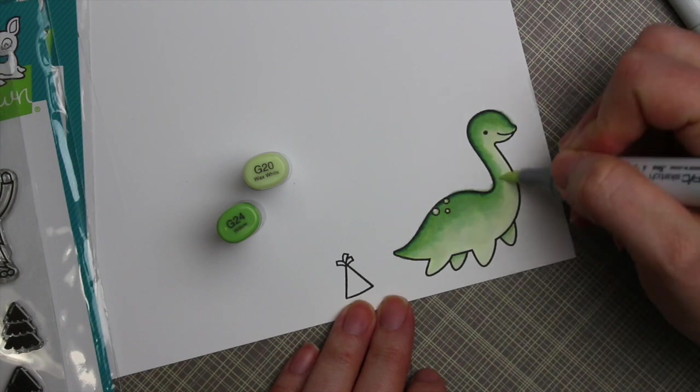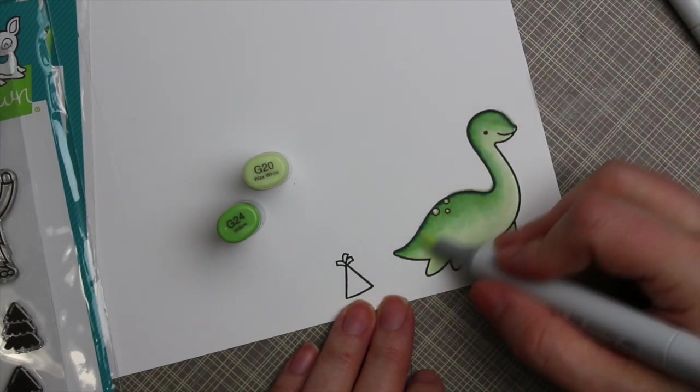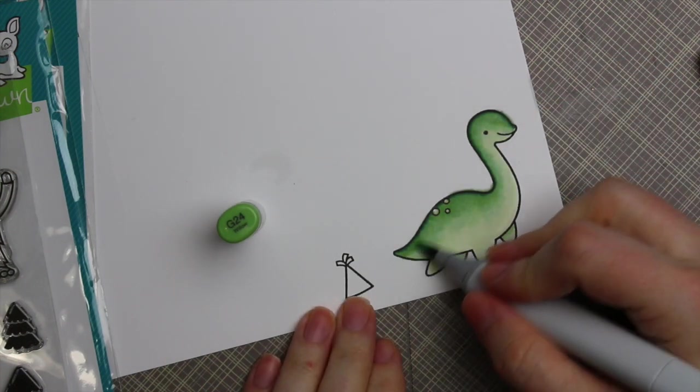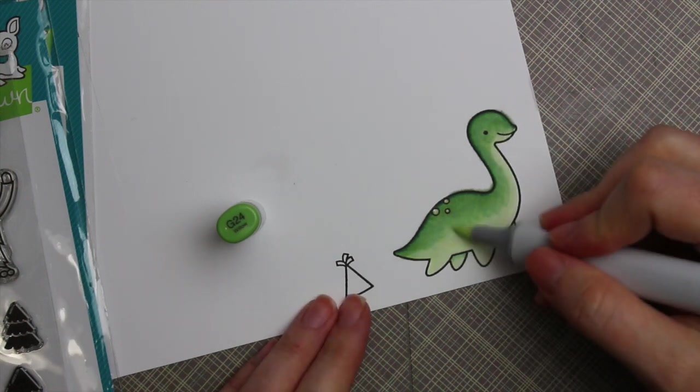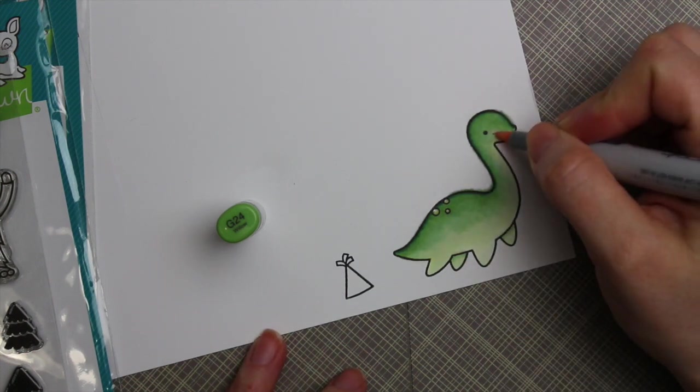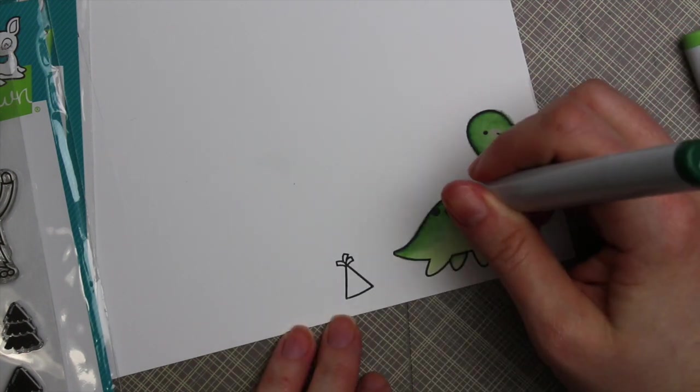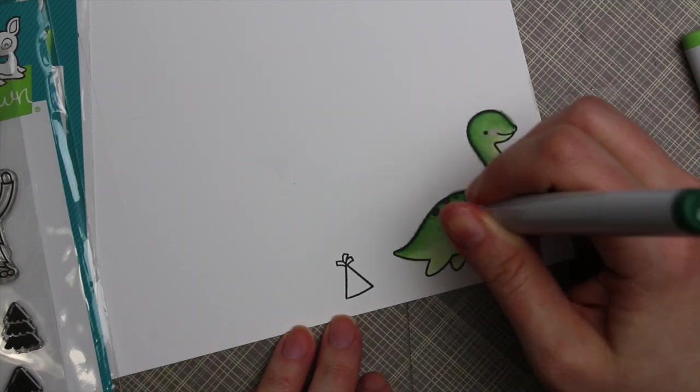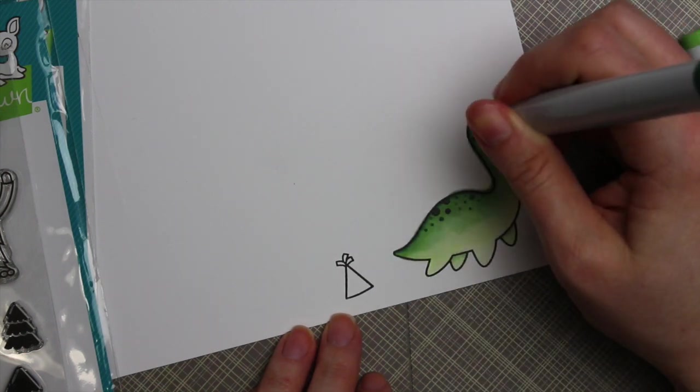But for this little guy, I thought I would use my Copics. So I used three different shades of green and I didn't worry too much. Like I was pretty heavy handed with the ink of the Copics to kind of get the colors to blend together. I didn't really worry about them bleeding out because I was planning on fussy cutting this out, but I just worked back and forth between the lightest to the darkest.